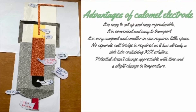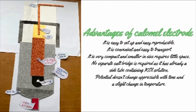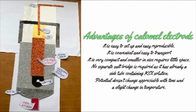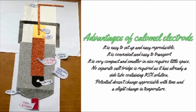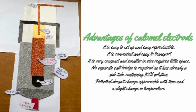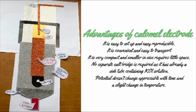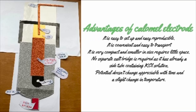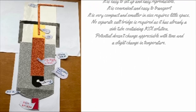Advantages of the calomel electrode include that it is easy to set up and easily reproducible. It is convenient and easy to transport. It is very compact and smaller in size, which means it requires little space. No separate cell bridge is required as it already has a side tube containing KCl solution. And last but not least, potential does not change appreciably with time and a slight change in temperature.